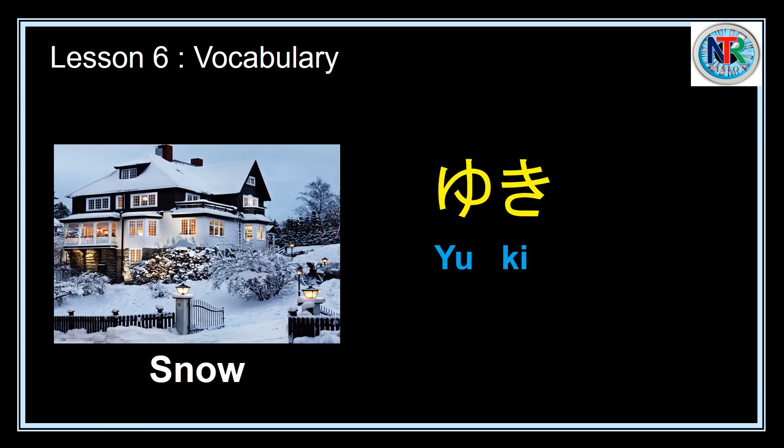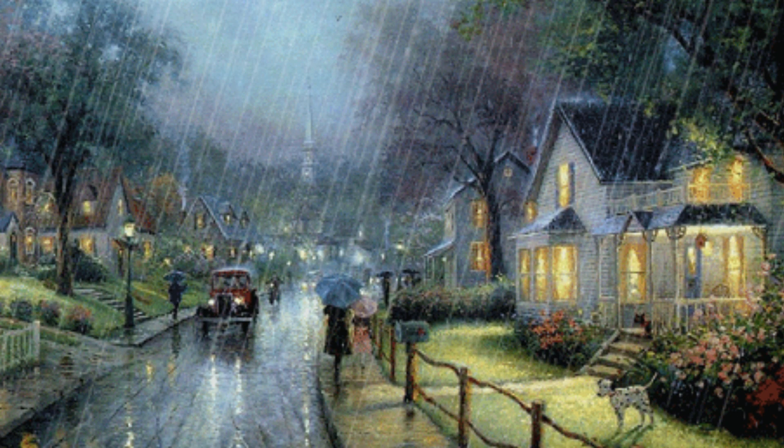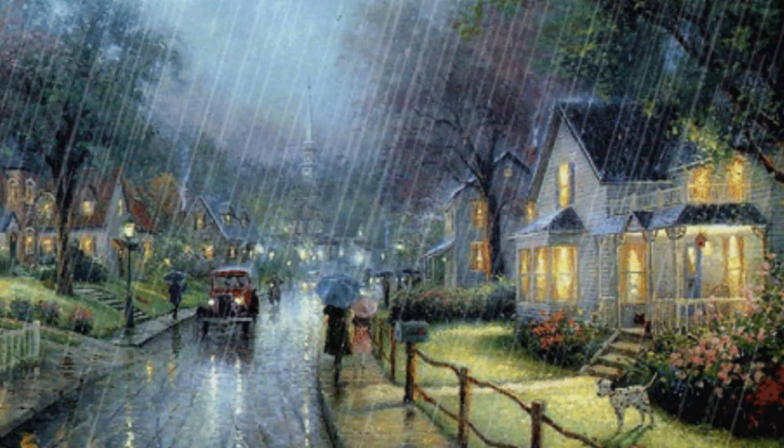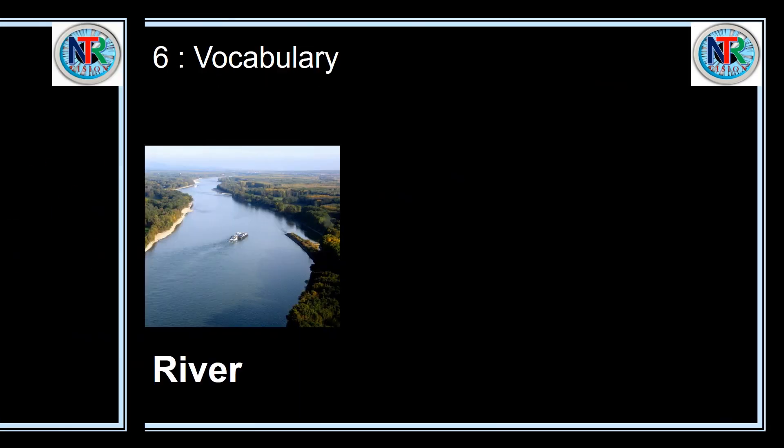Now, we will know some weather elements. Like, Yuki means snow. Ame means rain. Baire brishti hoche. Soto ni ame ga furimasu. Tenki means weather. I tenki desu. Good weather.